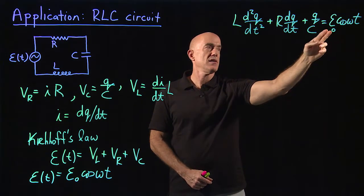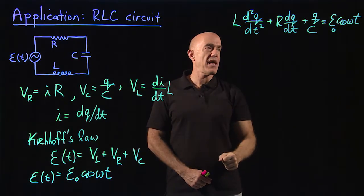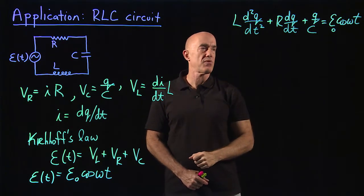This equation has a lot of parameters in it: L, R, C, E naught, omega. It pays to reduce the number of parameters.